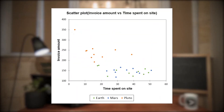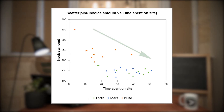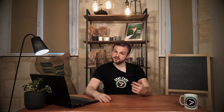Do you remember this scatter plot we obtained in the former video? We used analytic data from users of a shoe-selling platform to plot invoice amount against time spent on the website. Each dot represents a customer colored according to origin. This single plot provided us with lots of interesting information: invoice amount decreases with time spent on the site, Plutonians spend more money than the other customers, two distinct behavioral profiles can roughly be distinguished, and so on. Exploratory data analysis tools will let us have the same kind of reasoning on multivariate data, which is to say data involving many variables.